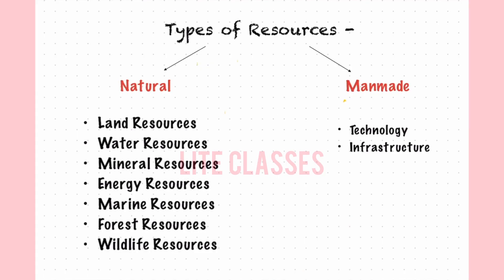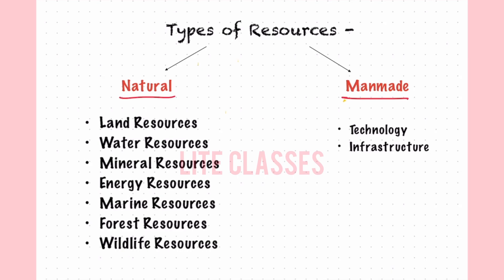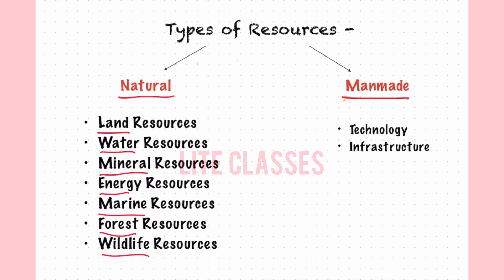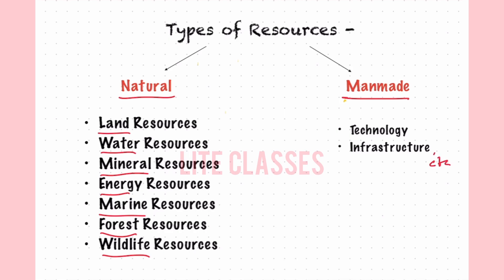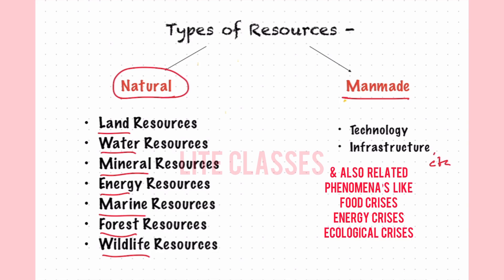On the basis of this analogy, we can categorize resources into natural and man-made. Natural resources include land, water, mineral, energy, marine, forest, and wildlife. Man-made resources include technology, infrastructure, skills, etc. In this series we're going to focus upon natural resources, as this is part of our syllabus.